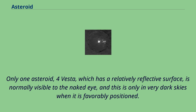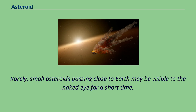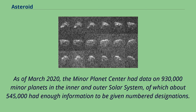Only one asteroid, 4 Vesta, which has a relatively reflective surface, is normally visible to the naked eye, and this is only in very dark skies when it is favorably positioned. Rarely, small asteroids passing close to Earth may be visible to the naked eye for a short time. As of March 2020, the Minor Planet Center had data on 930,000 minor planets in the inner and outer solar system, of which about 545,000 had enough information to be given number designations.